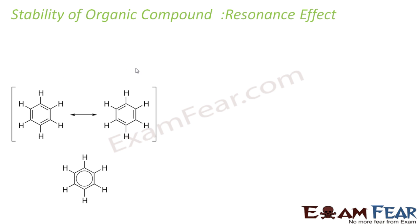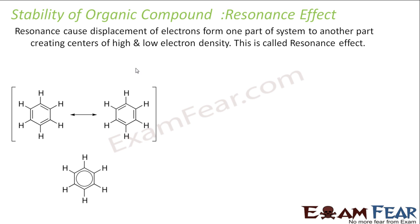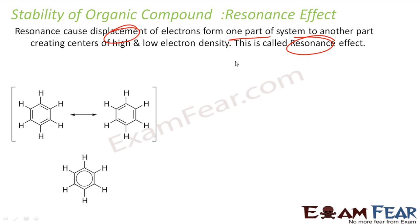Resonance is nothing but the displacement of electrons from one part to another, and with that it makes the system more stable. Because if in the system you have more electrons at one point and less at another, it becomes unstable. If electrons are fully delocalized, it becomes stable. This is the resonance effect — the electrons are delocalized across the actual structure.